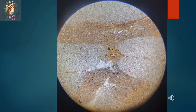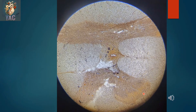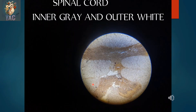Another slide in which you can see the entire butterfly-shaped area of the spinal cord, with the central canal in the center, the anterior horn, and the posterior horn. This is the same slide at lower magnification.